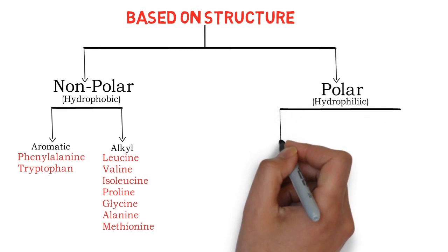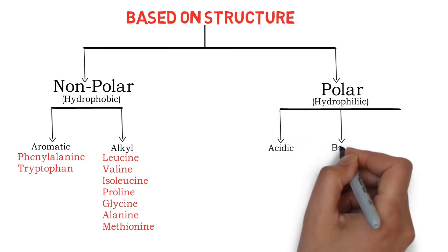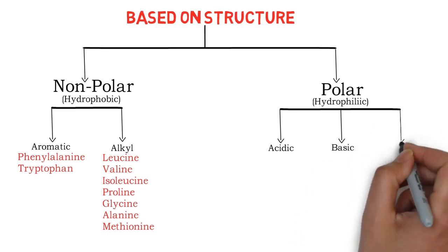Polar amino acids can be divided into three parts: first is acidic, second one is basic, and third one is neutral.